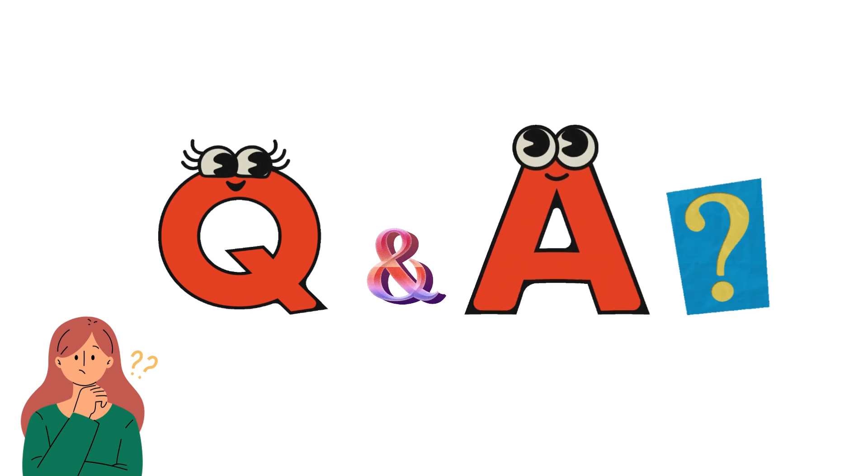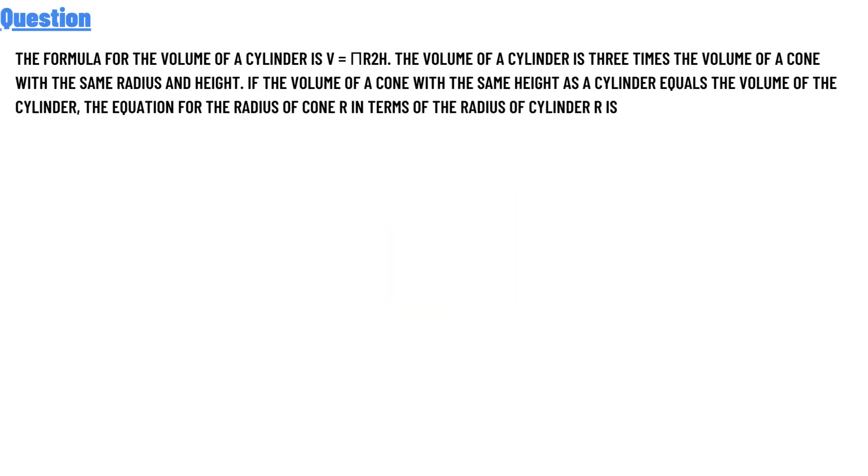Today's question is: The formula for the volume of a cylinder is V = πr²h. The volume of a cylinder is three times the volume of a cone with the same radius and height. If the volume of a cone with the same height as a cylinder equals the volume of the cylinder, the equation for the radius of the cone in terms of the radius of the cylinder is: